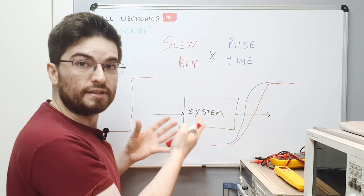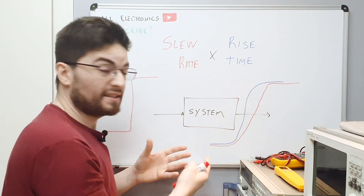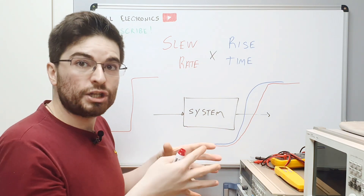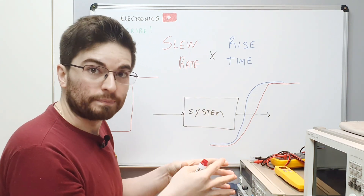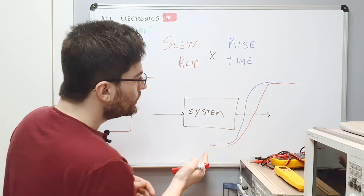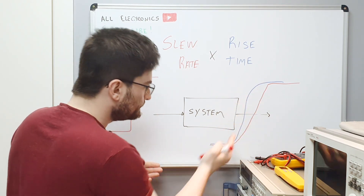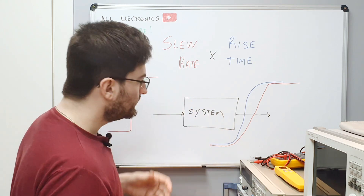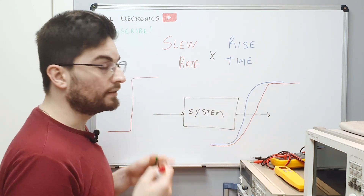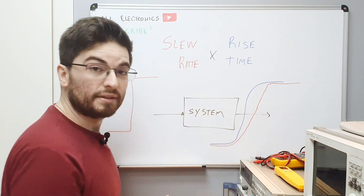Because an ideal system would rise as fast as needed to precisely match the mathematical description. The real-life circuit can only raise the output at a maximum rate, defined by the internal construction of the circuit. Now the output is slew rate limited.